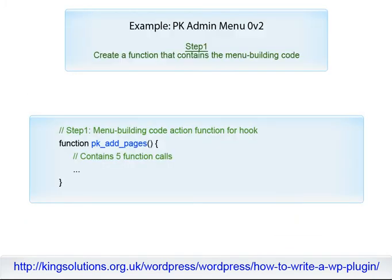Once again, we will follow the three steps discussed in previous lessons to create these WordPress admin menus. Step one in the process is to create a function that contains the menu building code — PK_add_pages in this example. This contains the five function calls whose purpose is to add the various menus we require to the dashboard menu structure.